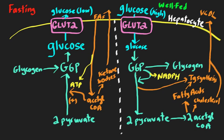Once G6P is made, you can go the other way into making glycogen — that's called glycogenesis. It also can go down glycolysis, the glycolytic pathway, through a variety of steps to make pyruvate. The difference here is that this pyruvate was made from glucose oxidation, whereas the pyruvate on the fasting side was made from glucogenic amino acids and maybe lactate — not through glycolysis, because glycolysis is turned off in the fasting state.